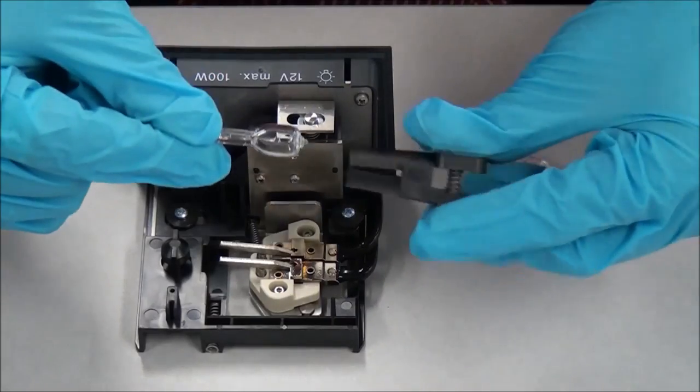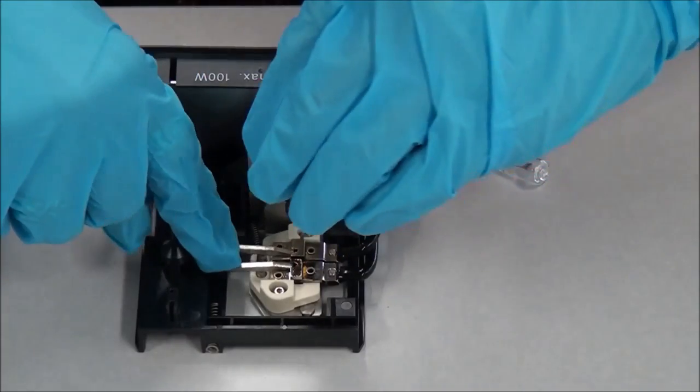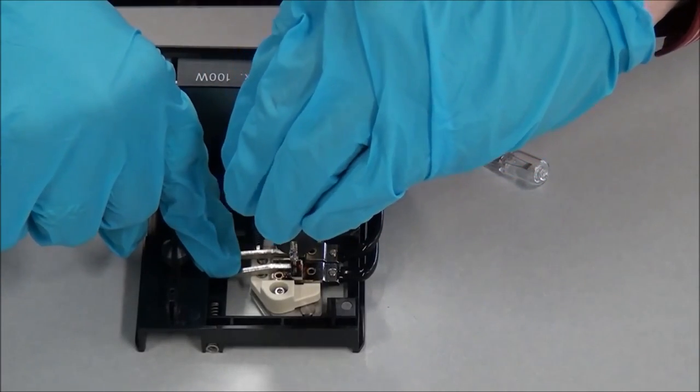Depress the two spring clips again and fully insert the new bulb into the socket. Release the spring clips and remove the replacement tool.